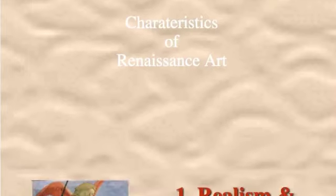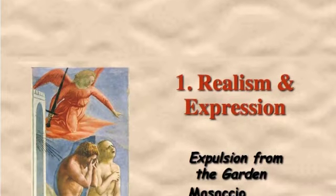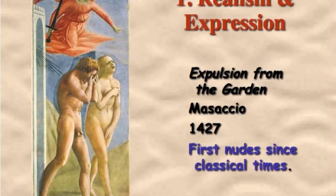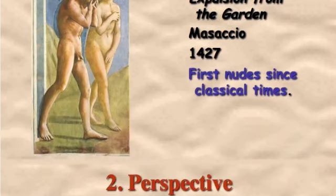We're going to learn about seven characteristics that are traditional of Renaissance art that you might not see in modern art or Impressionist art. The first characteristic is realism and expression. Unlike medieval art that seemed flat and emotionless, Renaissance artwork showed people's feelings and emotions. Masaccio was a very early Renaissance artist who really wanted to represent subject matter truthfully, precisely, and in detail — meaning being realistic and showing people's emotions.